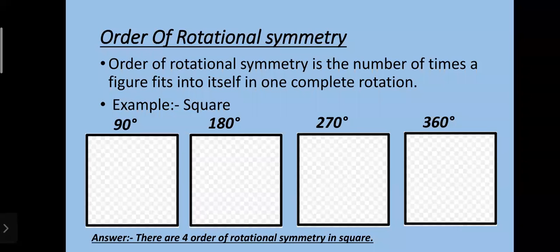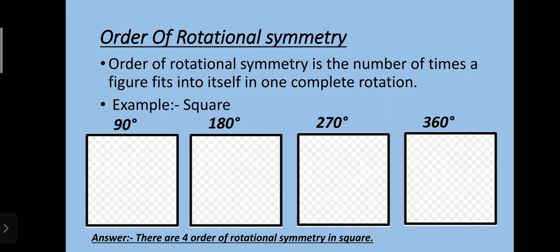It means the number of times a figure looks the same as the original figure when rotated less than one full turn. Here I have taken a square. When I rotate it to 90 degrees it looks the same as the original square. At 180, 270, and 360 degrees it also looks the same. So in all four positions it looks the same, meaning the square has an order of rotational symmetry of four.